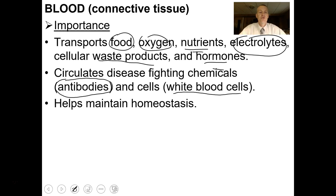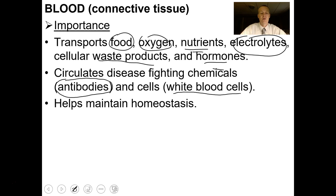Another job of the blood is to maintain homeostasis — an internal balance of different things like pH. We don't want our body to become too acidic or too basic. Blood maintains homeostasis of hormones, waste products, gases, and all different kinds of things.